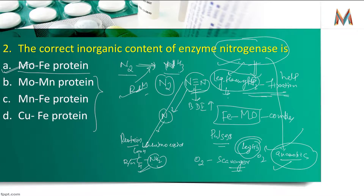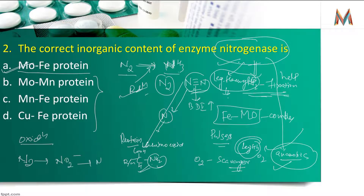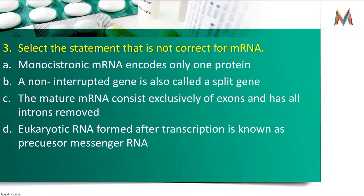यह reduction से होता है। Atmosphere में nitrogen, NO2- और NO3- के form में use होता है — और इन दोनों processes में oxygen add हो रहा है, इसका मतलब यह दोनों processes oxidation के through हैं। इसमें अलग bacteria काम करते हैं — Nitrosomonas, Nitrococcus, Nitrobacter।